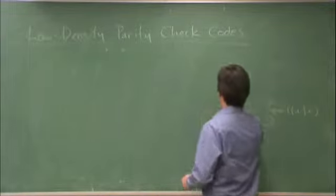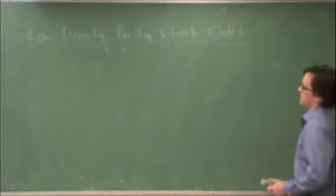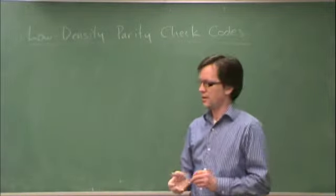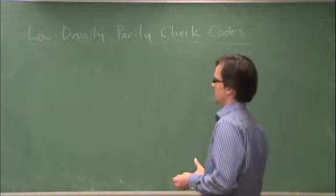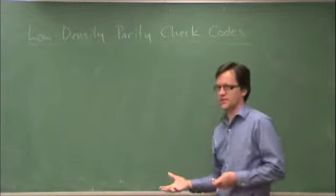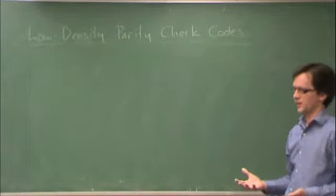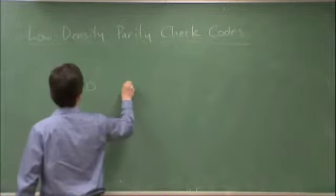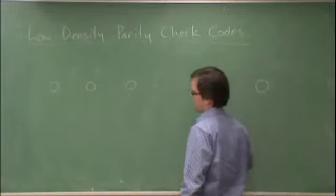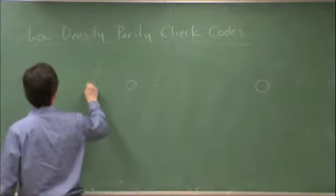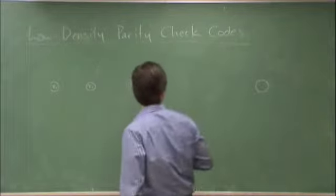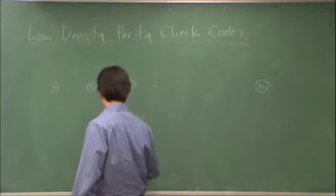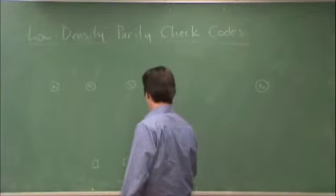Now, it turns out it's more convenient to start with the factor graph. So what we're going to do is start with the factor graph, and from that we can obtain the parity check matrix. And in fact, what we're going to show is that we're going to use the sum product algorithm to decode these codes. So therefore, there's really no point in writing down the parity check matrix. So what we'll have are n variables up here, n code word variables, and down here m parity checks.